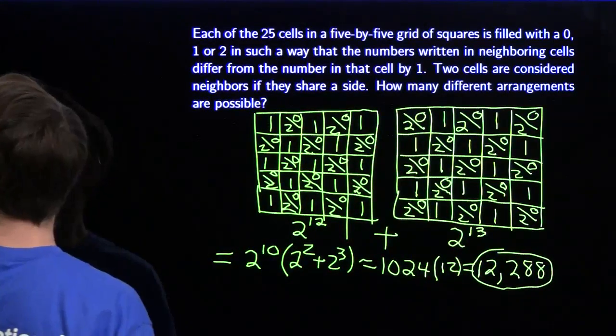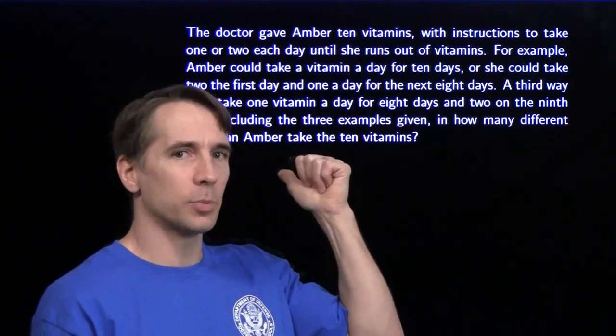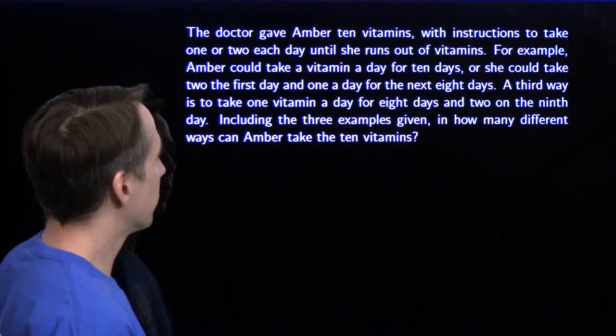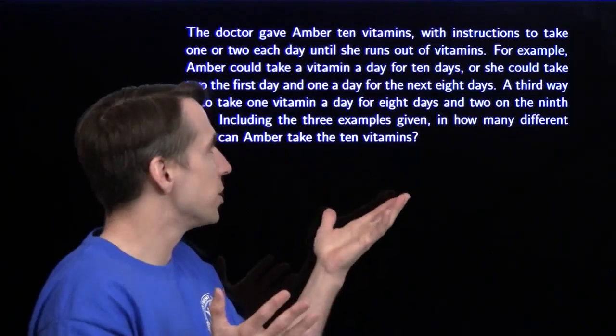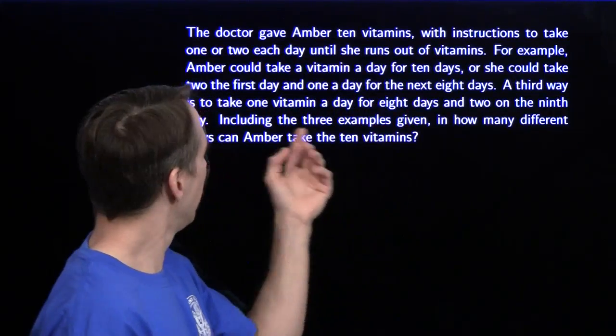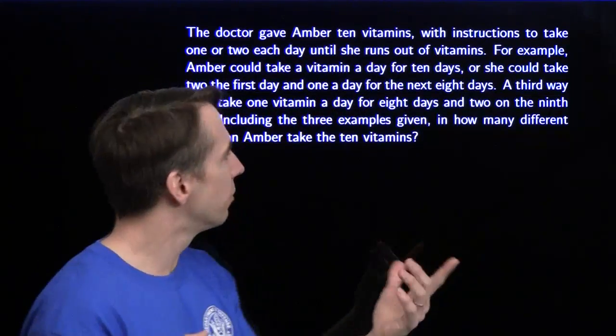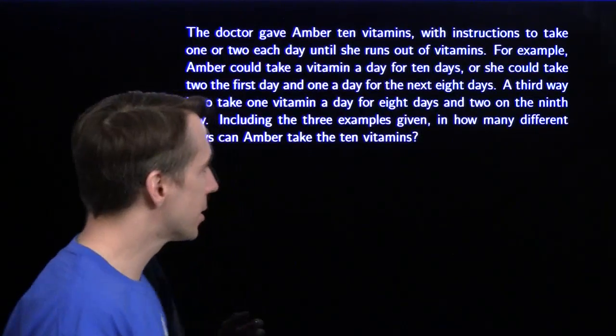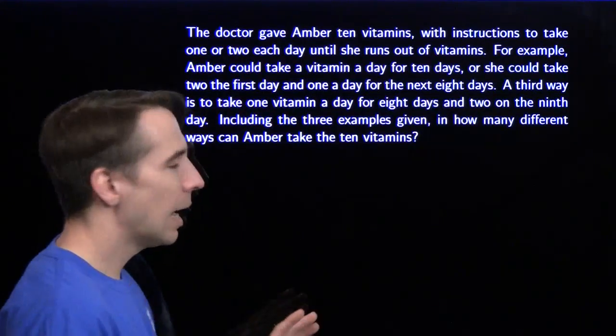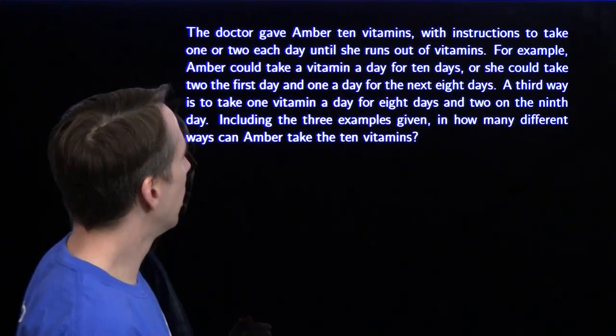I promised you two problems, so here's another problem, and I promised you three strategies, so we're going to tackle this one in two different ways. A doctor gives Amber ten vitamins with instructions to take one or two each day until she runs out. So she could take a vitamin a day for ten days, or take two on the first day and then one on each of the next eight days, or take a vitamin each day for eight days and then take the last two on the last day. How many ways could she take all the pills? Strategy one: we're going to get organized and list out all the ways. The key when doing casework is to stay organized so that you count everything once and only once.